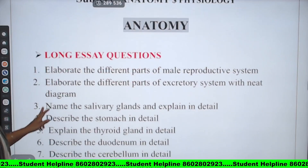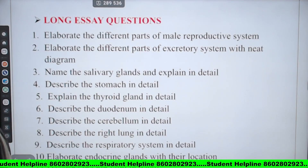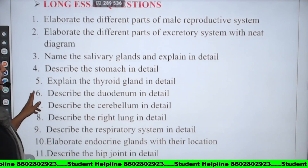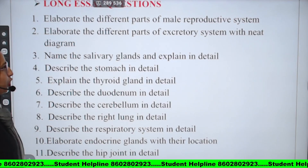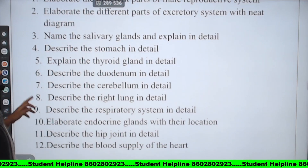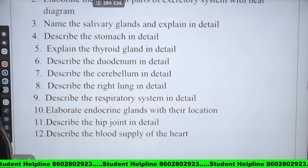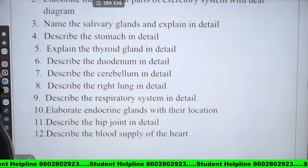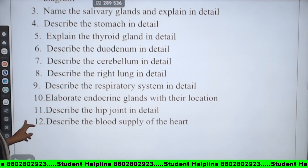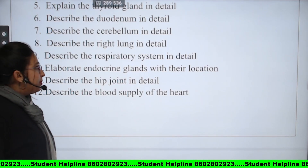Let's look at the first long essay questions. First: Elaborate the different parts of the male reproductive system. Second: Elaborate the different parts of the excretory system with a neat diagram. Third: Name the salivary glands and explain in detail. Fourth: Describe the stomach in detail. Fifth: Explain the thyroid glands in detail. Sixth: Describe the jejunum in detail. Seventh: Describe the cerebellum in detail.